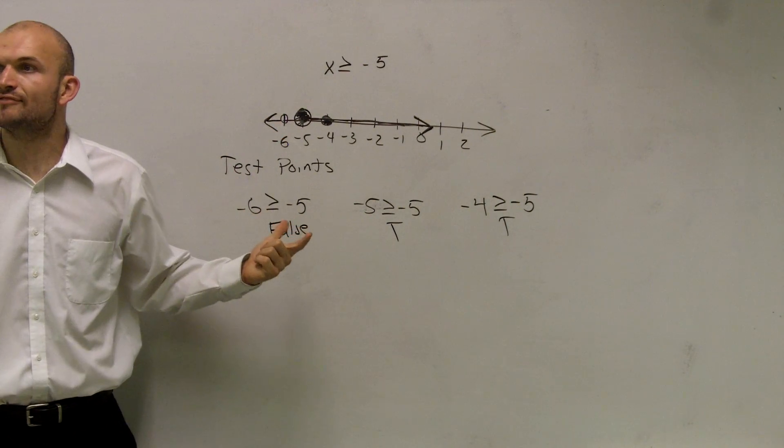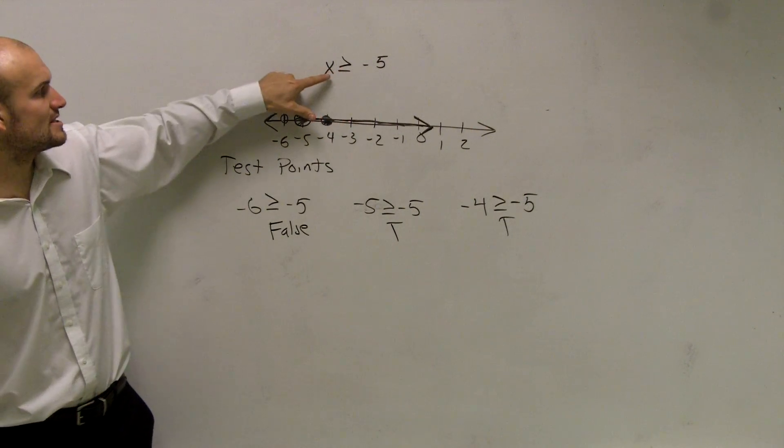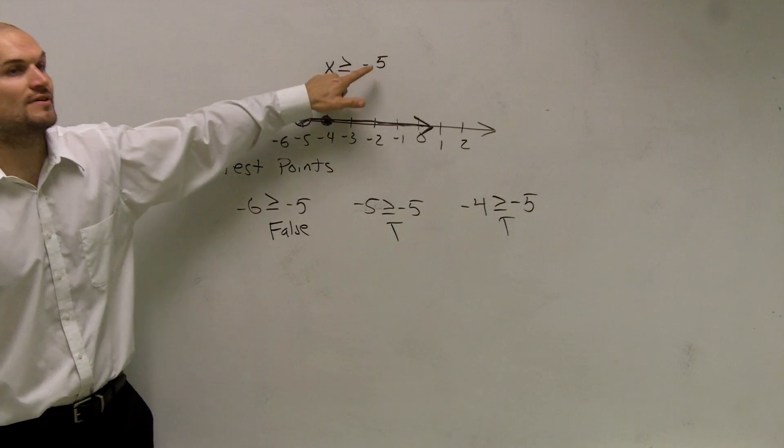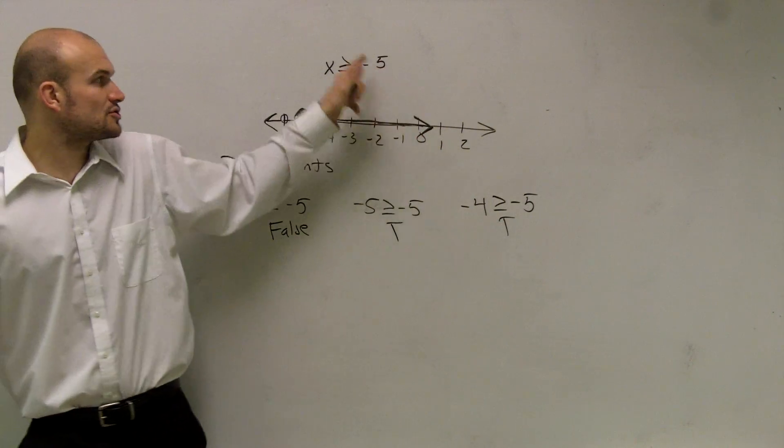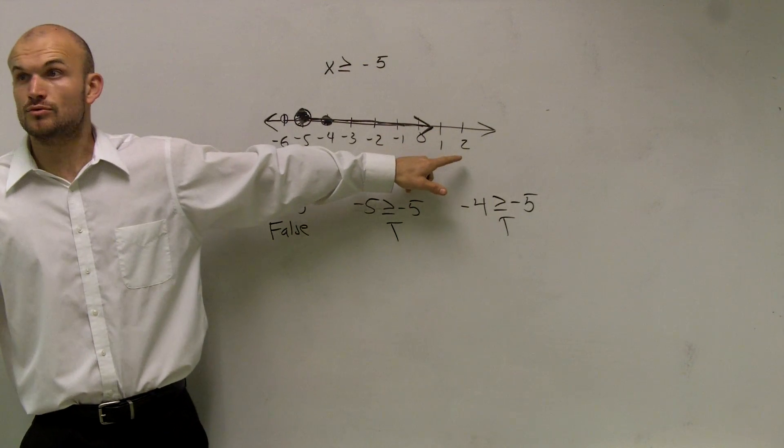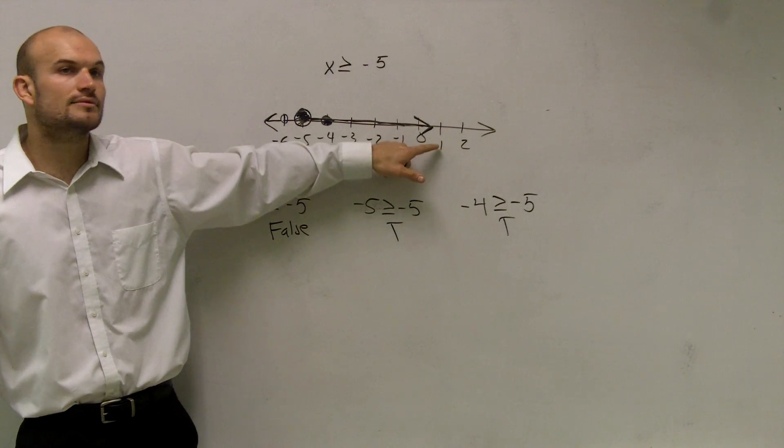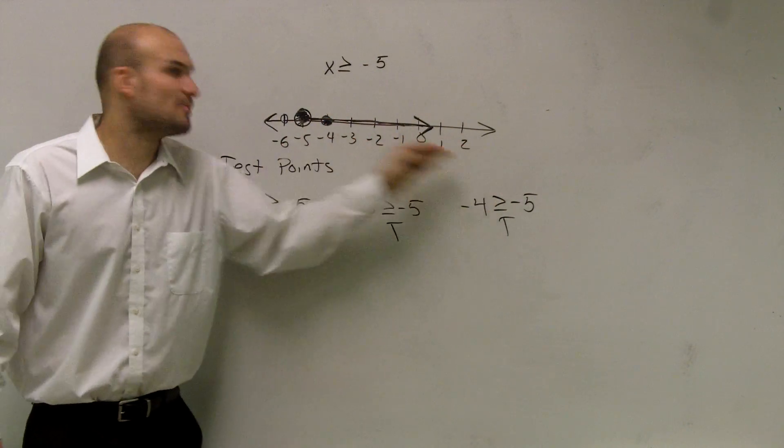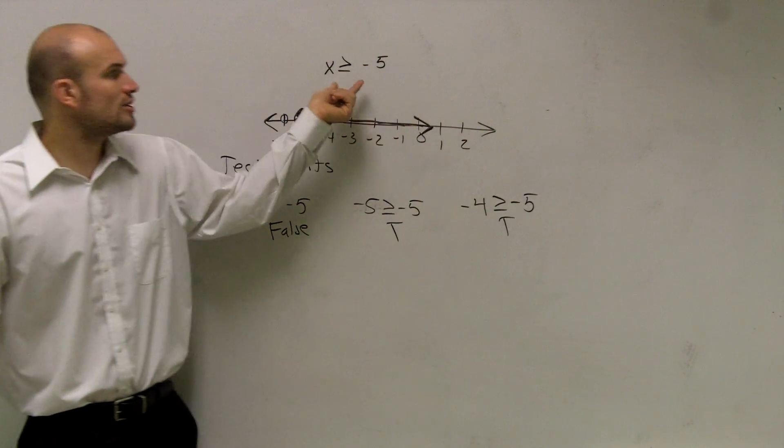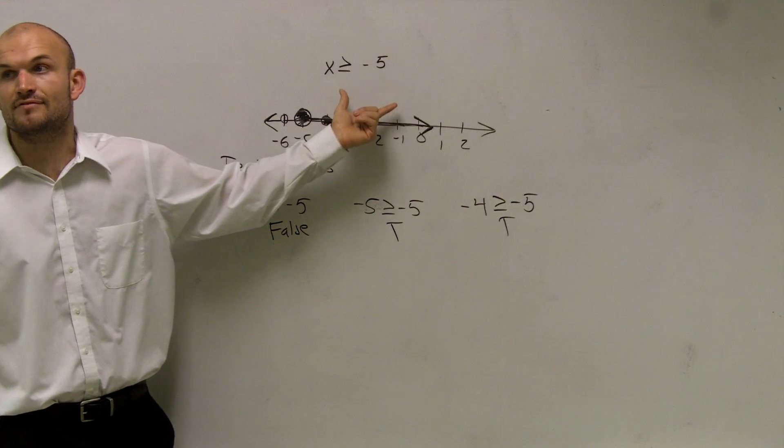And let's just go and take a look at it, see if this makes sense. So it says x is greater than negative 5. So let's look at all these numbers that I put. Are all these numbers greater than negative 5? Is 2 greater than negative 5? Yes. Yep. Is 1? Yes. Zero? Yep. So all these numbers going all the way to infinity are all going to be greater than or equal to negative 5. Make sense?